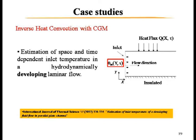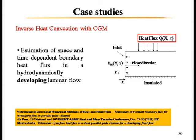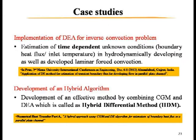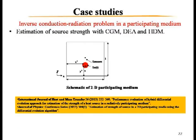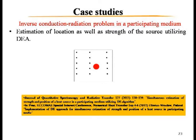Hydrodynamically and thermally developing flow is considered to estimate the inlet temperature with the help of sensors. Heat flux is also estimated with sensors in a hydrodynamically and thermally developing laminar flow. Then the differential evolution algorithm is applied in hydrodynamically developing as well as developed laminar flow conditions, and the hybrid algorithm is developed. Here, in a participating medium, not only the strength of the heat source but also its location is estimated simultaneously — if we have some space with heat generation and don't know where it is situated, this model estimates both the source strength and exact location. This is published in JQSRT.